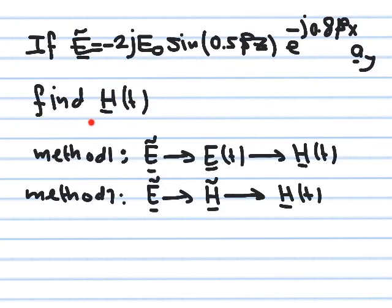We want to find the magnetic field as a function of time. There are two approaches: Method 1 — convert the phasor of the electric field to the time domain and then use Maxwell's equations in the time domain to get H(t). Method 2 — use Maxwell's equations in the frequency domain on the phasor to get the phasor of H, then convert back to the time domain. Both approaches give exactly the same answer because sinusoidal quantities can be handled in either domain.